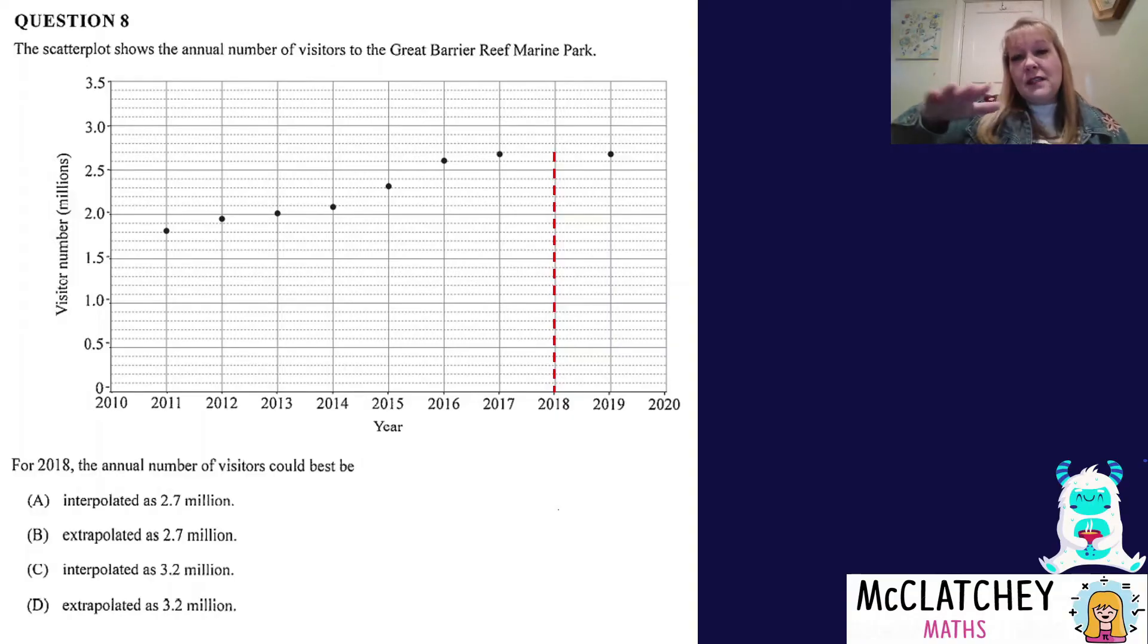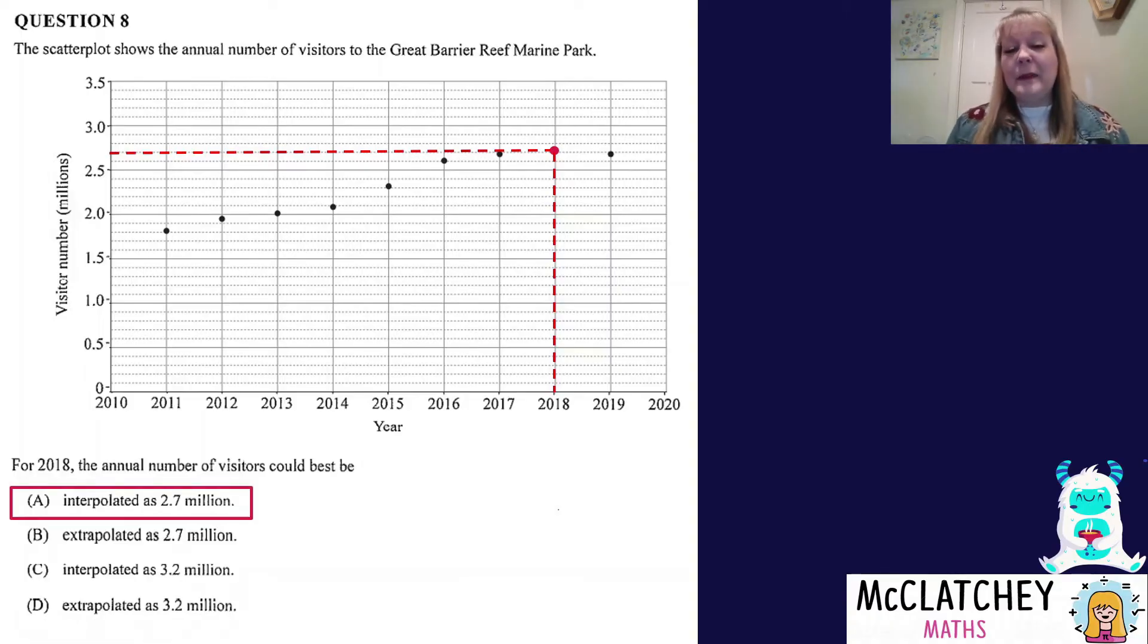Without a line of best fit, we're really just looking to see what the trend might be here. There's two choices for interpolation: one is 2.7 million, one is 3.2 million. We've got to follow the trend, and the trend seems to be that it's grown slightly from about 2011, and then we're reaching this plateau point where it's just flattened out. My best prediction would be that it's going to be the same as the year before and the year after, sitting at 2.7 million. 3.2 is all the way up here, outside the data set. So we can only go with option A, interpolated at 2.7 million.